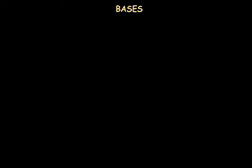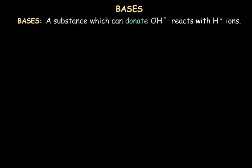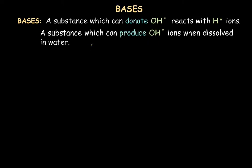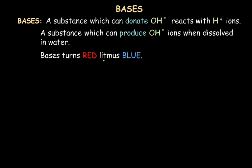Now let's go ahead to understand what are bases. Bases are the substances which can donate OH⁻, that is hydroxide ion, to react with H⁺ ions, that is to react with the acids. In other terms we can also say that bases are the substances which can produce hydroxide ions when dissolved in water. Just like acids, they also change the color of the litmus indicator, but in reverse — bases change red litmus to blue color.